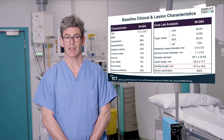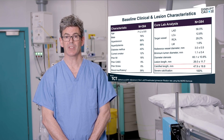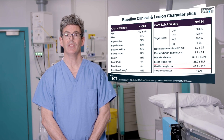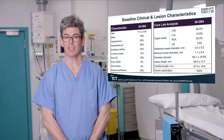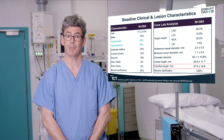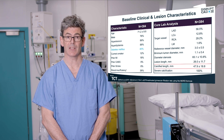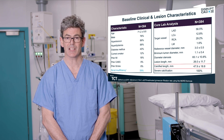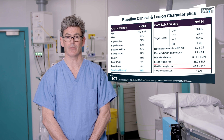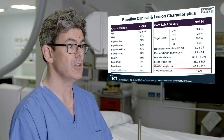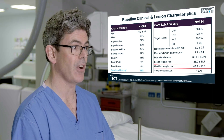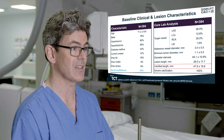These are the baseline clinical characteristics. The average age was 71. 90% of patients had either hypertension or hyperlipidemia, 40% had diabetes, and 26% were defined as renal insufficiency using an eGFR of less than 60.